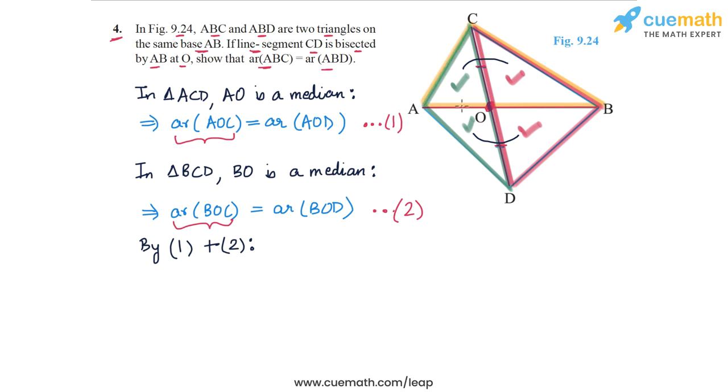Similarly, AOD plus BOD on the RHS will give us ABD, this whole triangle. This is what we are going to do.